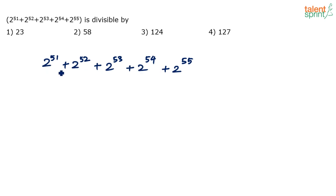2 to the power of 51 is the common value among all the five values here. So 2 to the power of 51 can be taken as common. So what happens? This will be equal to 2 to the power of 51 into 1.